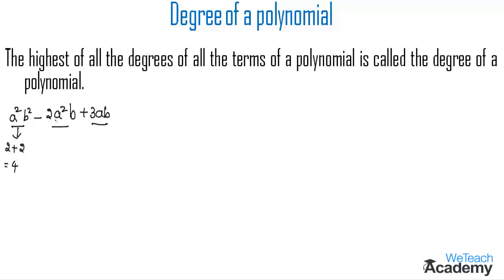In the next term we have the power of a as 2 and the power of b as 1, so we get 2 plus 1 as 3. And coming to the last term, by adding 1 plus 1 we get 2. So the degrees of all three terms are 4, 3, and 2.